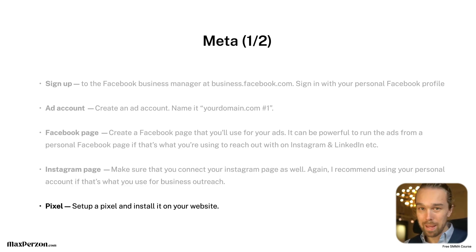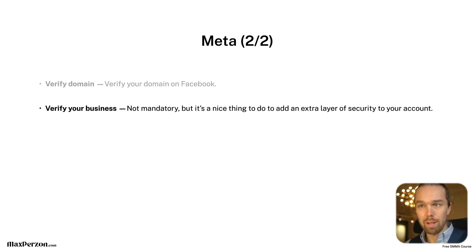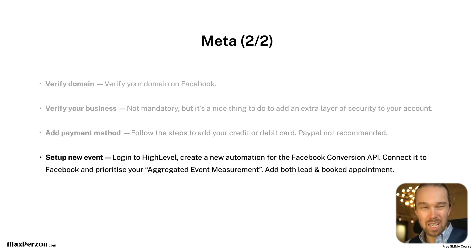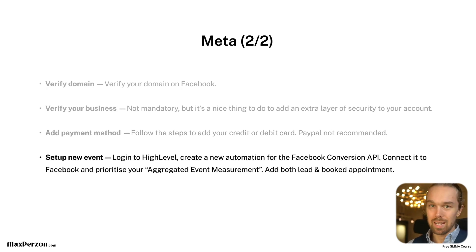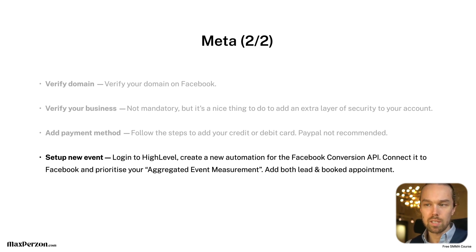You're also going to set up a Meta Pixel and install it on your website. Then you need to verify your domain, verify your business, add a payment method, and set up a new event. I recommend using a CRM system called High Level — you can create an automation for the Facebook Conversion API, connect it to Facebook, and prioritize your aggregated event measurements, adding both the lead and booked appointments events.